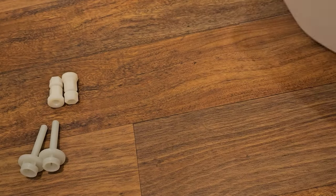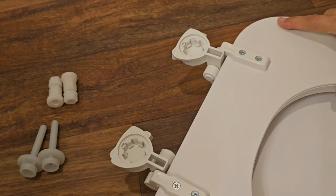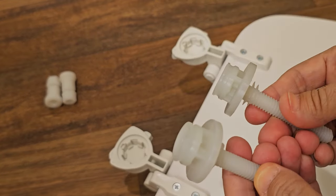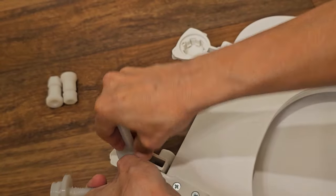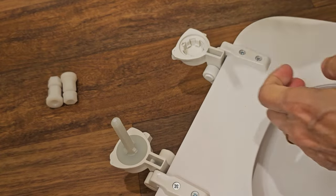Now turn the toilet seat over. Put the top of these bolts in. They snap in.